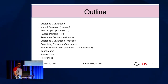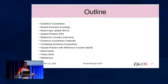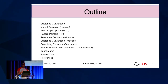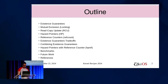The outline of this presentation: we will start slowly discussing existence guarantees and mutual exclusion. Then we will speed up discussing RCU, hazard pointers, and reference counting. After that, we will discuss the trade-offs of the various existence guarantee mechanisms. Then I will discuss how it's possible to combine existence guarantee mechanisms together to benefit from each of them. And I will present what I've been working on lately — hazard pointers with reference counter, HPref — present some benchmarks, and discuss future work.